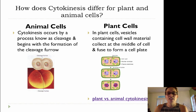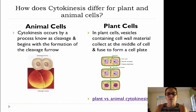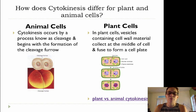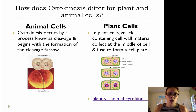Now cytokinesis occurs differently when you look at animal cells as opposed to plant cells, because there is an organelle that plant cells have that animal cells do not have, and that is the cell wall. So cytokinesis in animal cells occurs by a process known as cleavage, and it begins with the formation of a cleavage furrow.